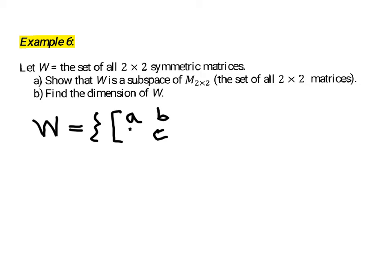If it's symmetric, then these entries need to match. So I'm going to put B's in both of these entries, because if it's symmetric, then these entries that are mirror images across the main diagonal need to match there. And so this is where A, B, and C are any real numbers.